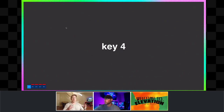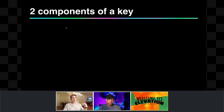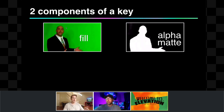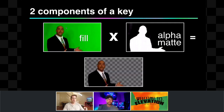This idea of removal is what we're diving into — how to make different elements of a key source transparent. Every key has two components: a fill, also called source, which is how the image looks coming raw off the camera or computer, and an alpha mat. For a green screen weatherman example, the fill is the raw camera shot. The switcher generates the alpha mat to determine what parts to make transparent.